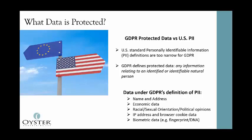GDPR's definition of protected data is much broader than PII, or personally identifiable information. GDPR defines protected data as any information relating to an identified or identifiable natural person; data related to businesses is not protected. Data that falls under GDPR includes name and address, economic data like income and transactional data, racial, sexual orientation, and political data, IP addresses, browser cookie data, and biometric data like fingerprints. Any data tied to an individual should be considered protected data.